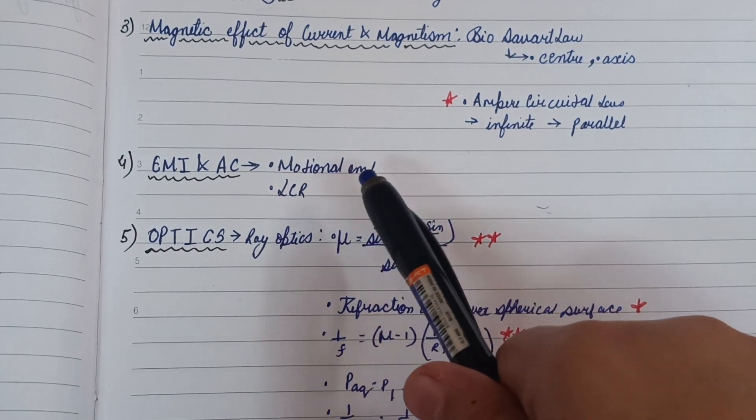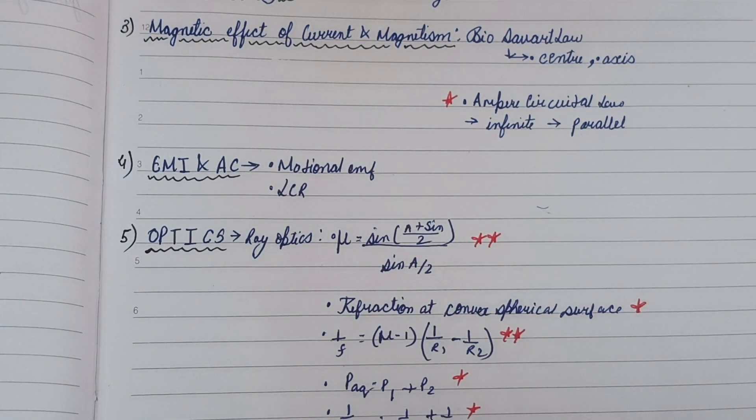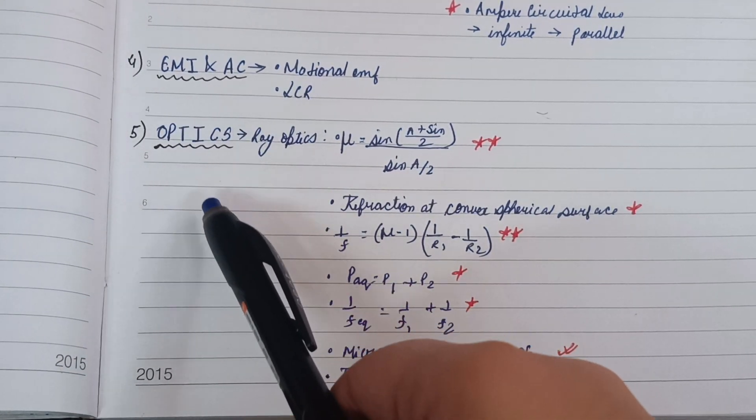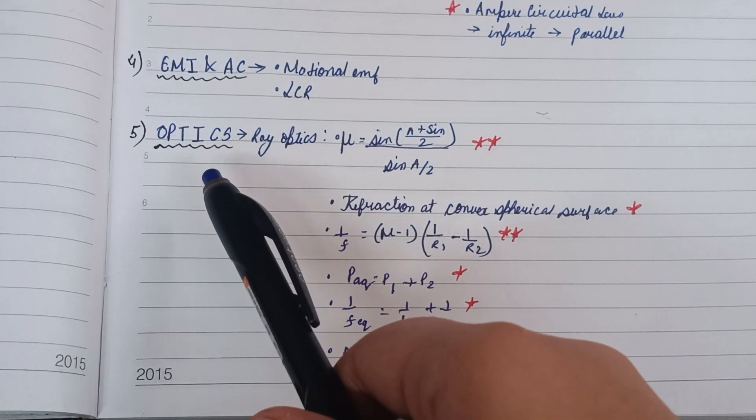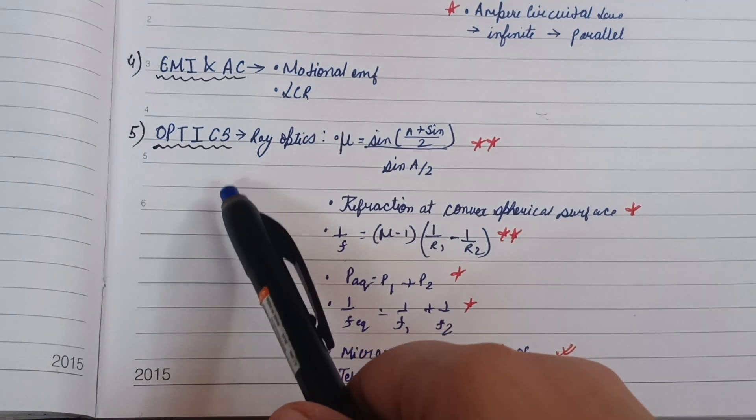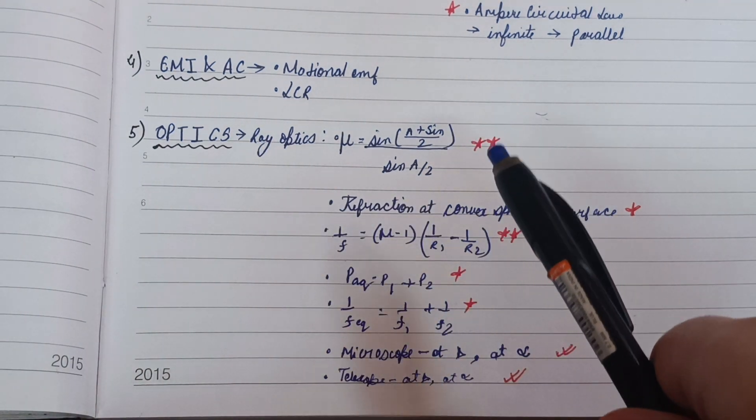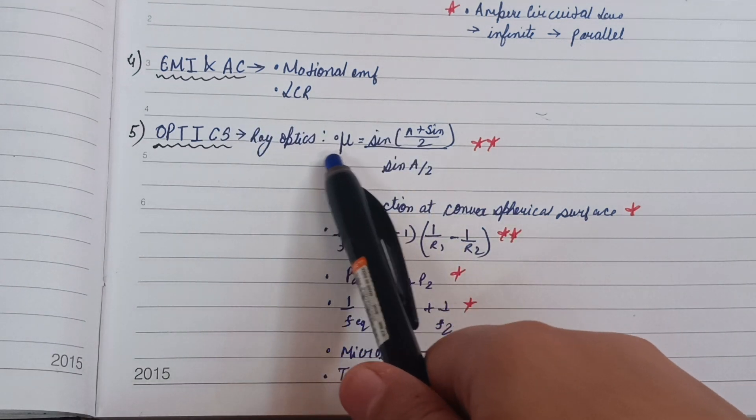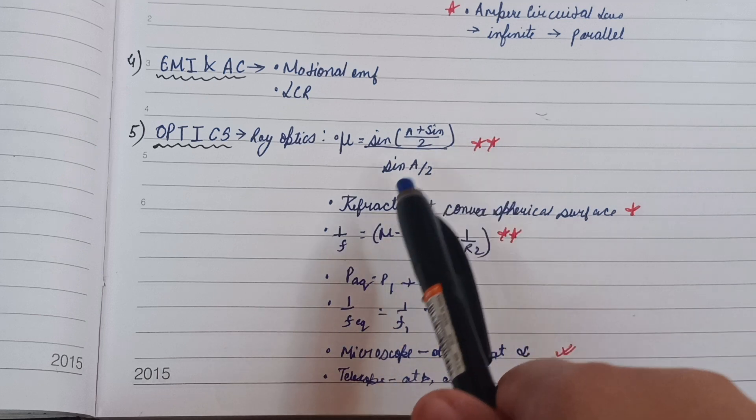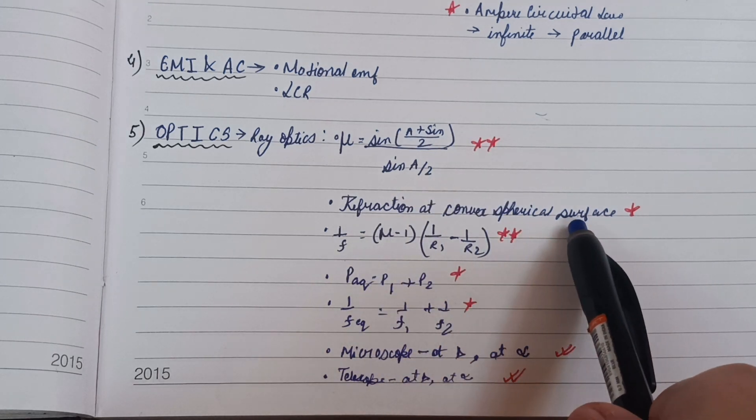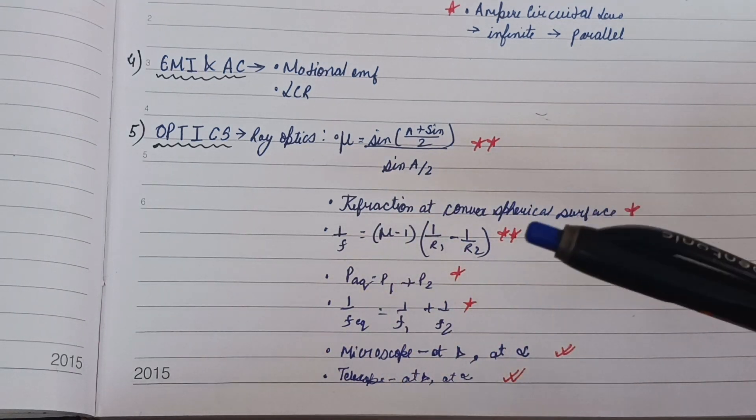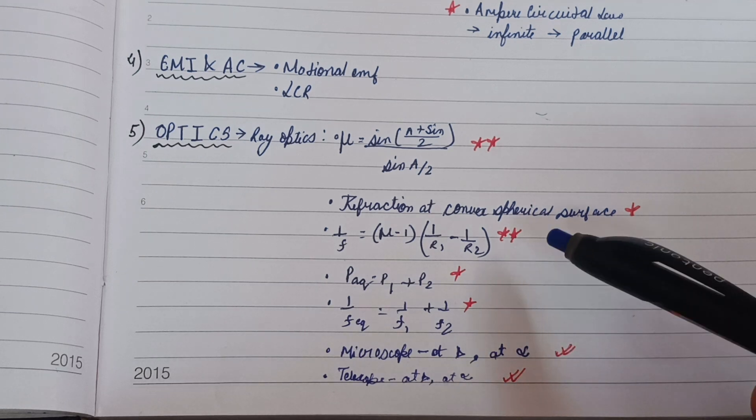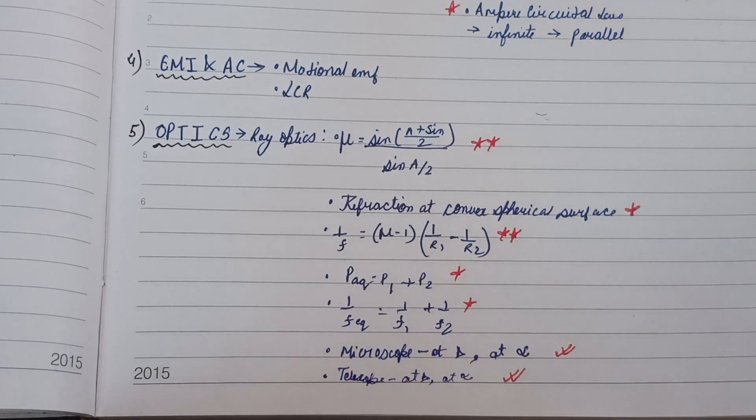From Optics, it carries the total weightage of 18 marks from the paper, so the derivations of this chapter from Optics are very important. You have to do all these derivations: refraction of convex spherical surface, microscope and telescope are the important ones, and which is double star, that is also important.